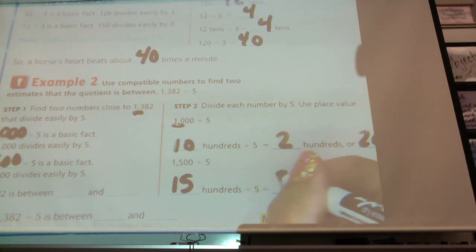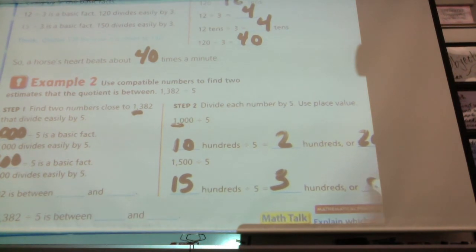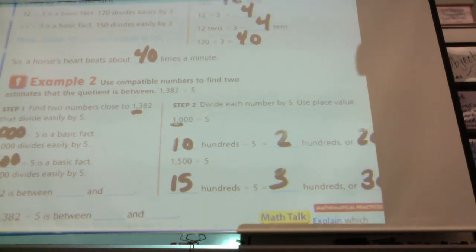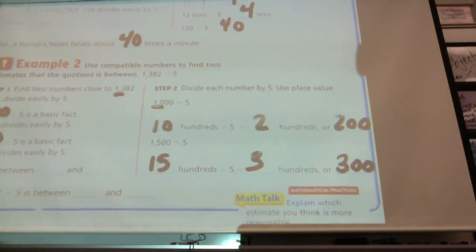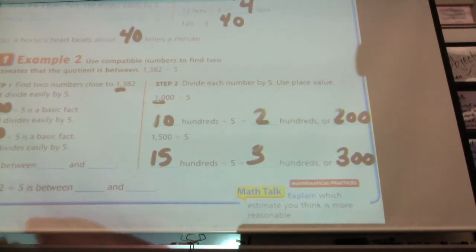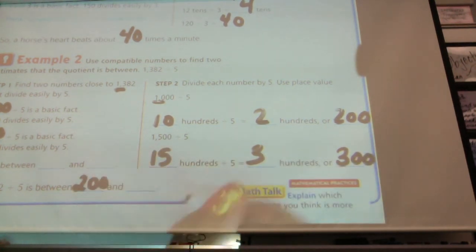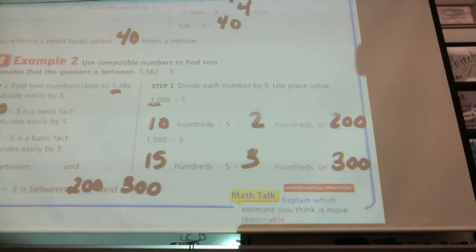All right, 300, or what does that look like as a number? 300. Okay. So we can say 1,382 divided by 5 is between these two numbers. Because it's at least 200, but it's not more than 300.